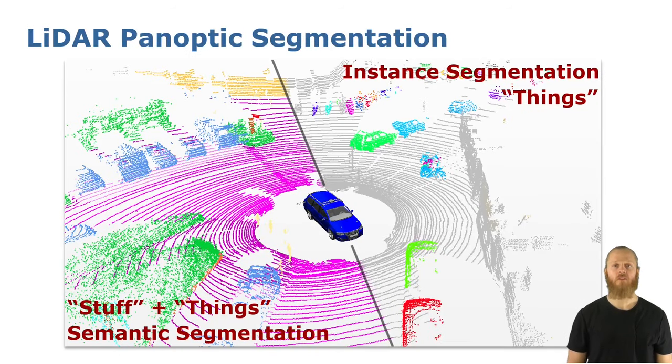Semantic scene understanding is a key requirement for autonomous driving. In this context, panoptic segmentation seeks to jointly achieve semantic segmentation to interpret the surroundings and instance segmentation to identify the different traffic participants.